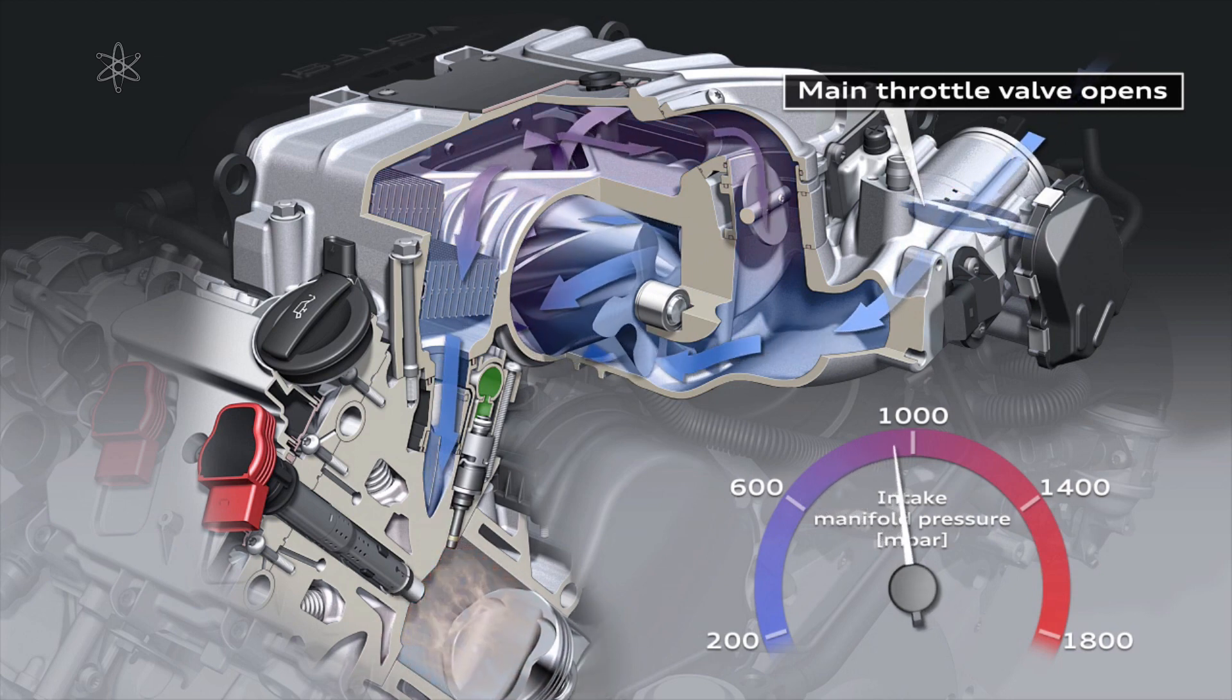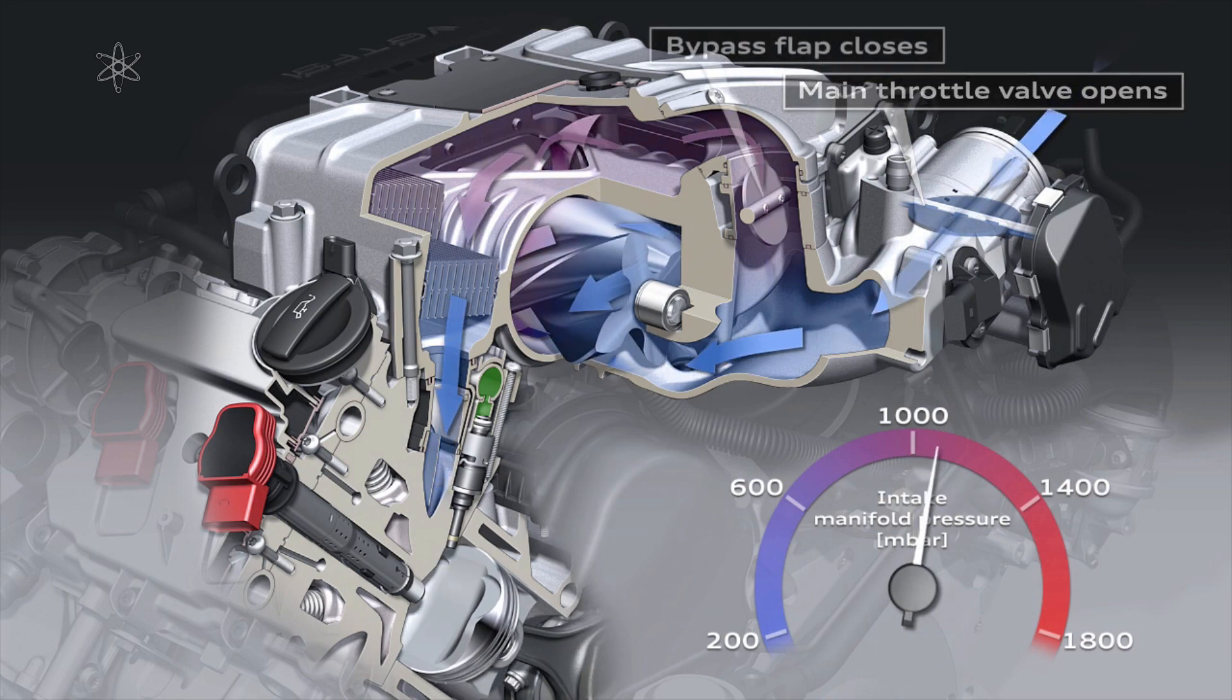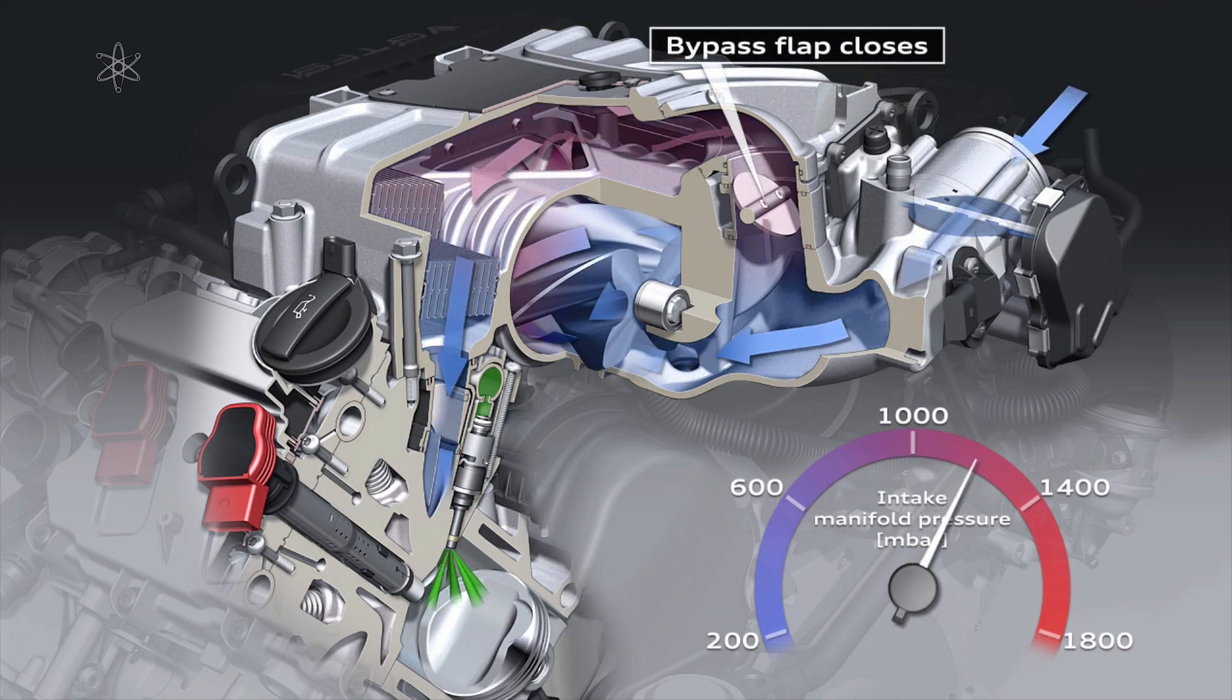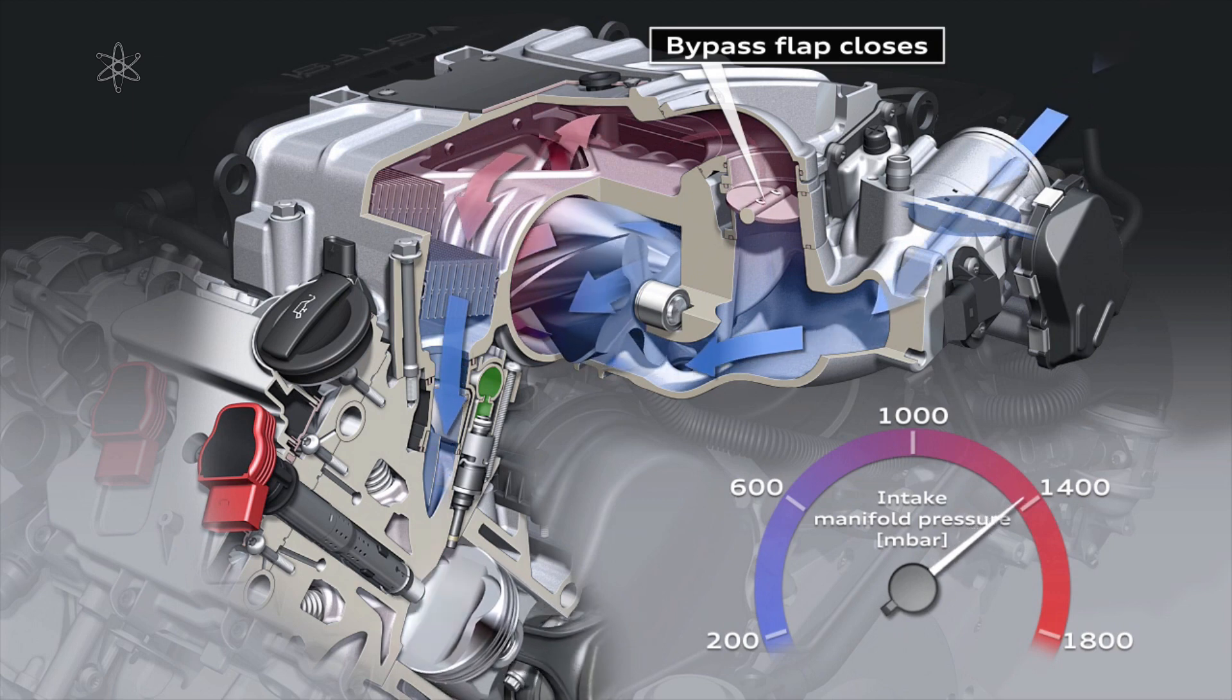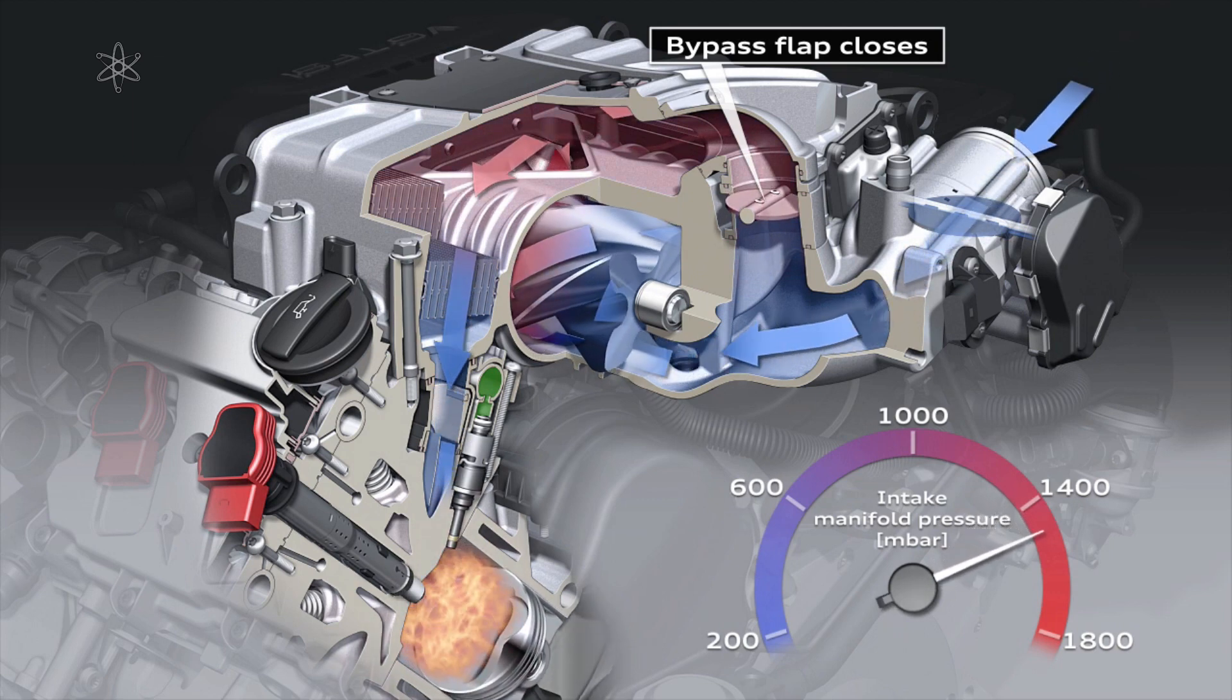Once the passage is closed, boost builds up, so does heat and load, as the route to cycle pressure is turned off. Parasitic losses increase to full load.